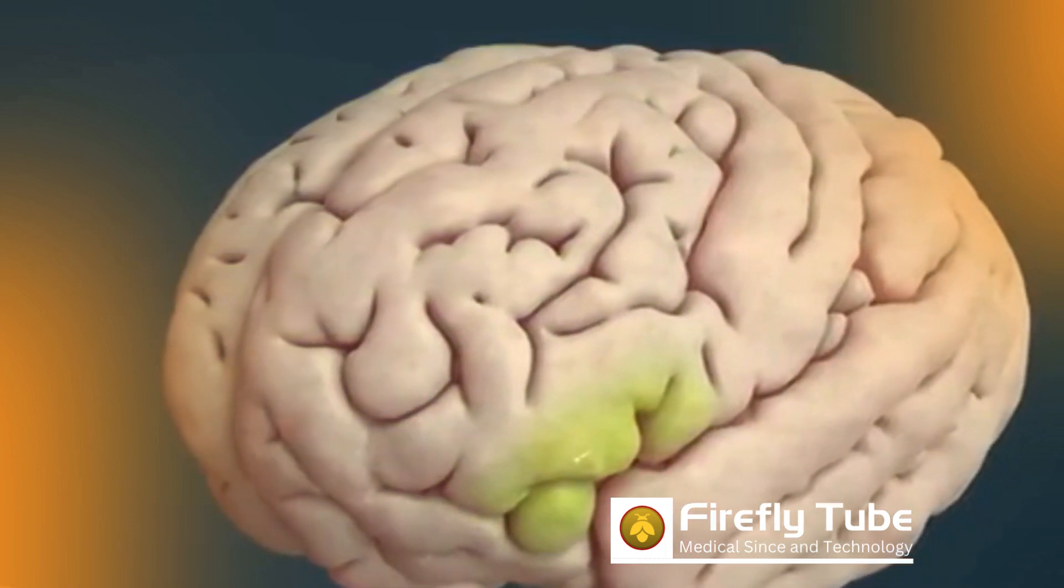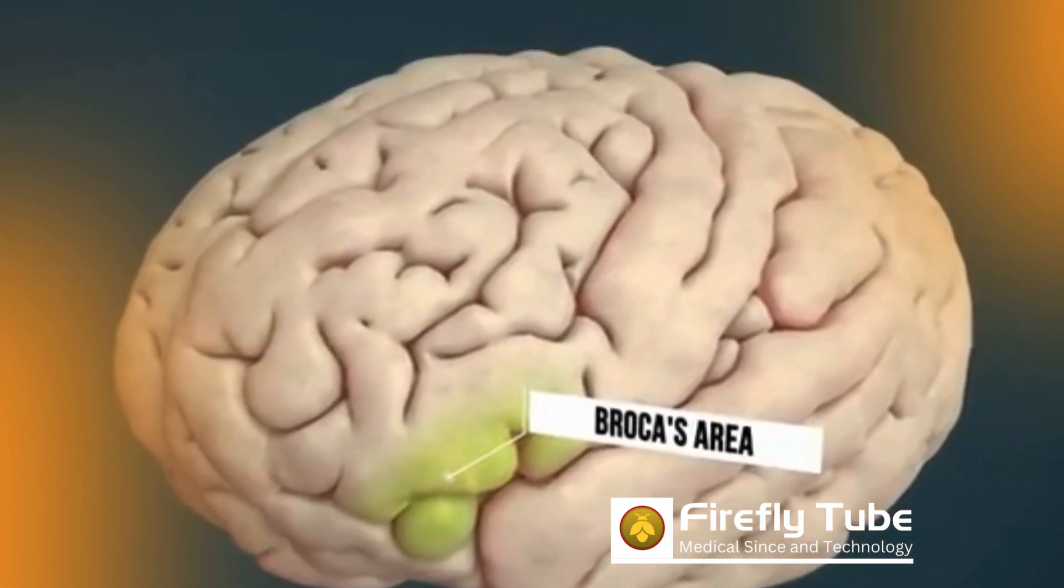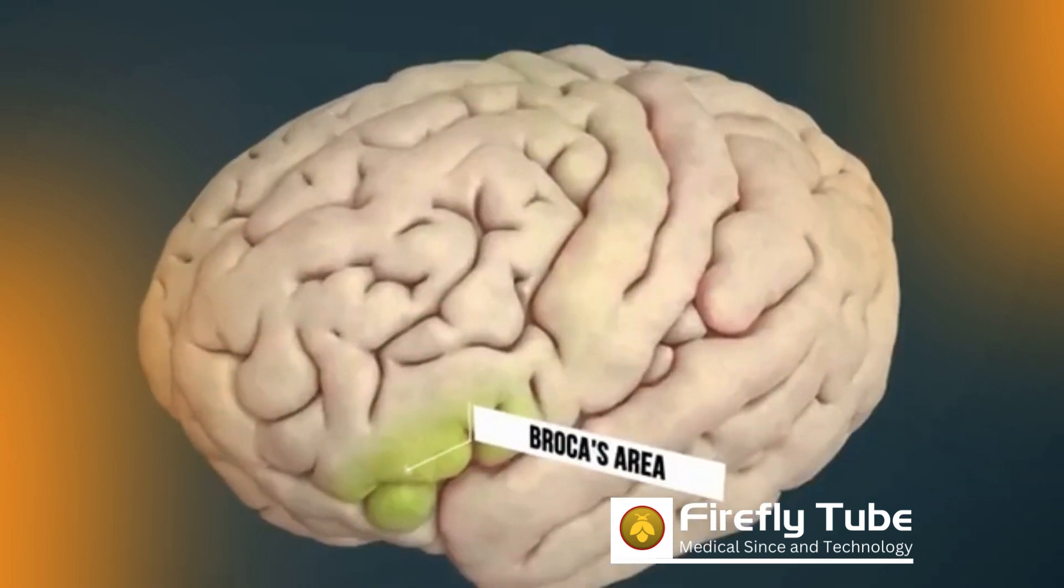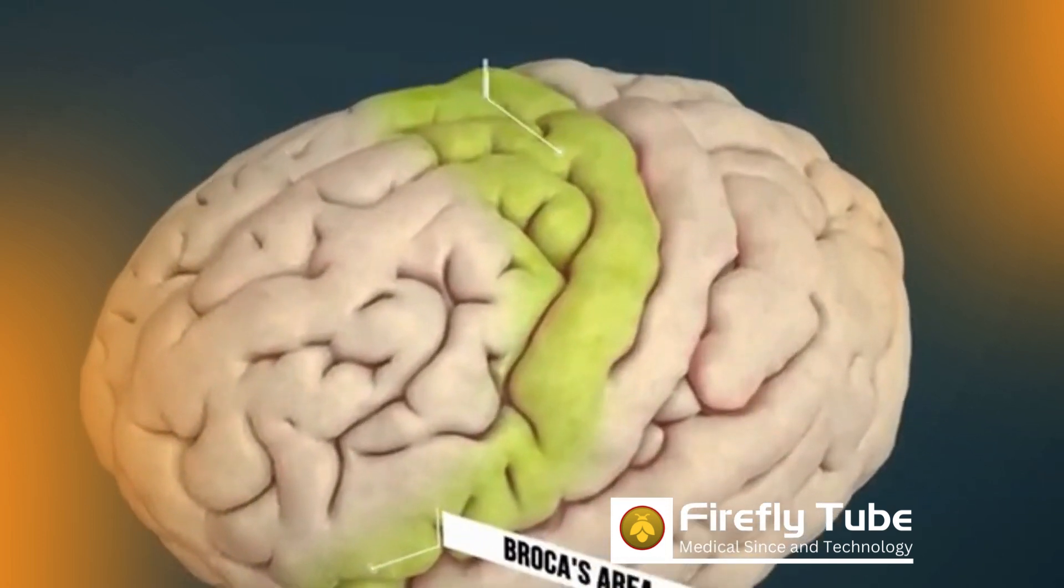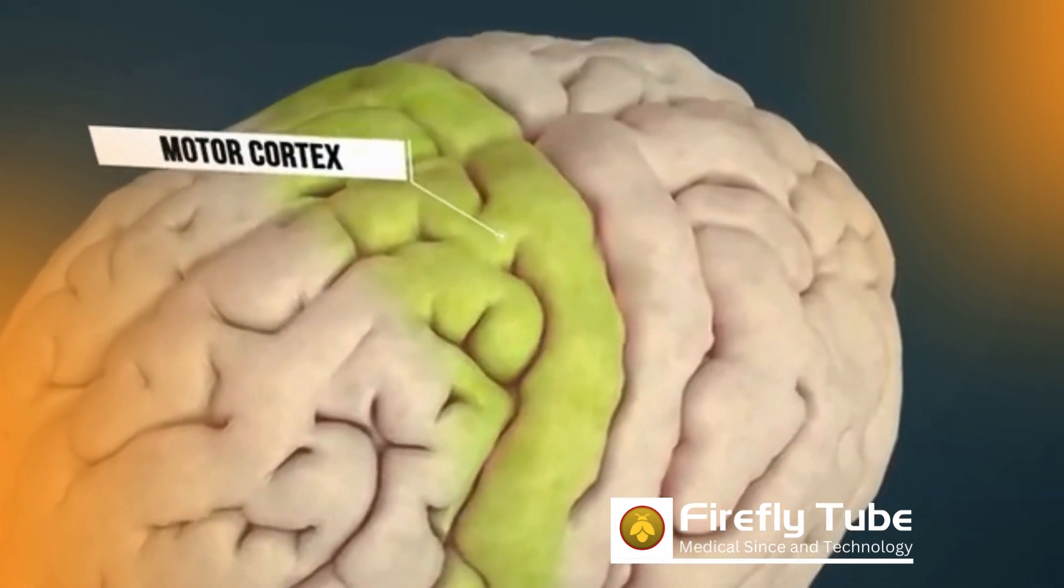Broca's area, which makes spoken and written language possible, is often located on the left side. Another important area in the frontal lobe is the motor cortex, which cooperates with the cerebellum so that we can carry out voluntary movements.